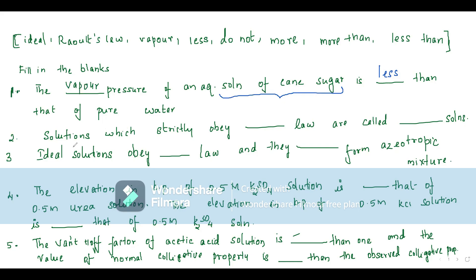Question number two: solutions which strictly obey dash law — Raoult's law — are called ideal solutions. Solutions which strictly obey Raoult's law are called ideal solutions.